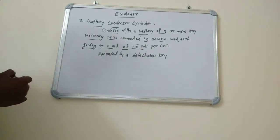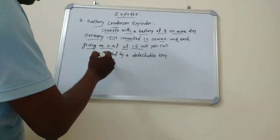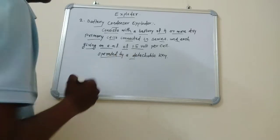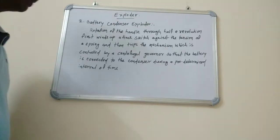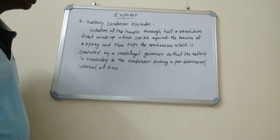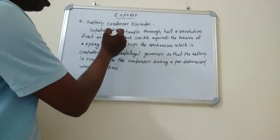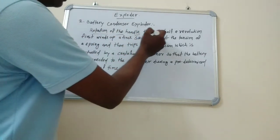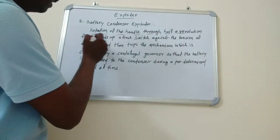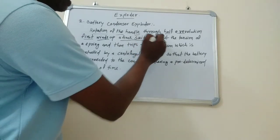This type of exploder is operated by a detachable key. Rotation of the handle through half a revolution first winds a fire switch against the tension of a spring and then releases the mechanism which is controlled by a centrifugal governor.